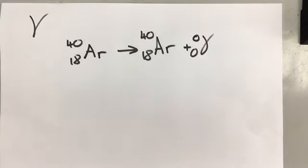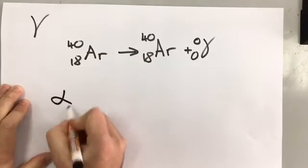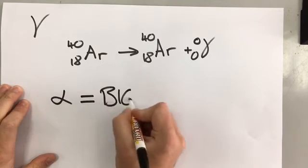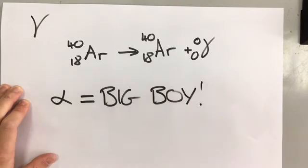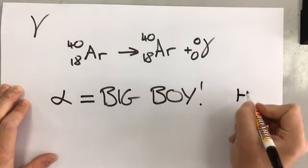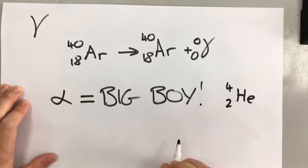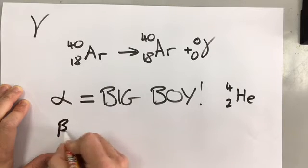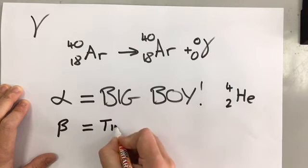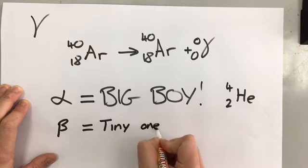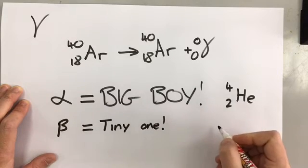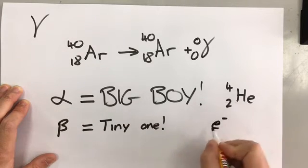In summary, an alpha particle is the big one, and that is a helium nucleus. Two protons, two neutrons. The beta particle is a tiny little one, and the tiny little one is just an electron.